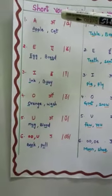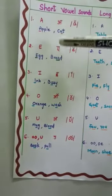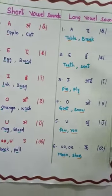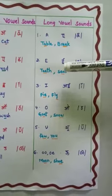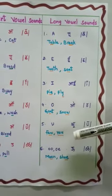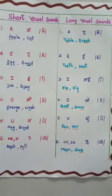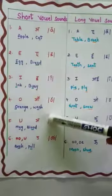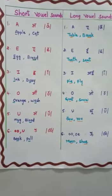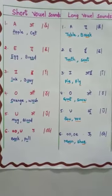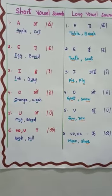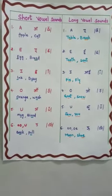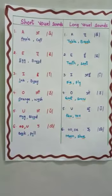Now let us review the sounds: A, I, O, U — short vowels; then I, E, I, O, U, U — long vowels. Did you understand, children? So these are the short vowel sounds and these are the long vowel sounds. Please do write in your rough notes and practice these sounds. Alright children, that's all for today. Keep learning. Take care. Bye-bye.